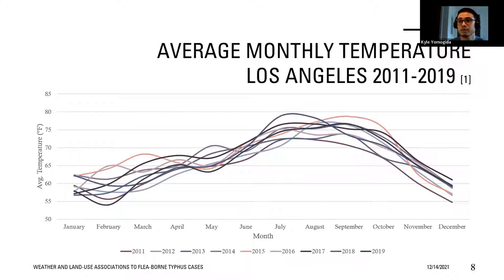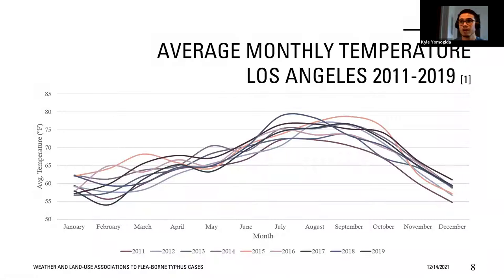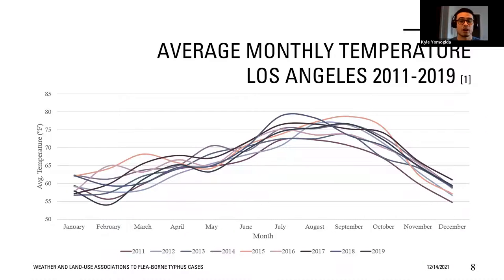Flea-borne typhus has been resurging for several years. California averaged 24 cases annually between 2001 and 2012. However, from 2011 to 2019 there were approximately 98 cases per year. Los Angeles and Orange Counties account for 97 percent of all flea-borne typhus cases reported between 2011 and 2019. This increase can in part be due to widening of the case definition in 2010, along with increased testing availability and relatively higher transmission in Southern California. Using months as an indicator for seasonality may be ambiguous year to year, especially in the context of ongoing climate change, so it is worth exploring temperatures directly rather than relying on months as a proxy.